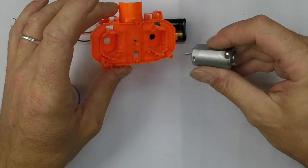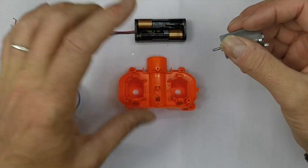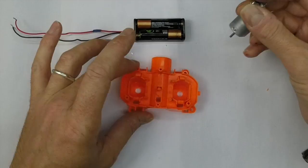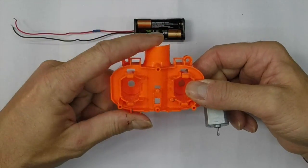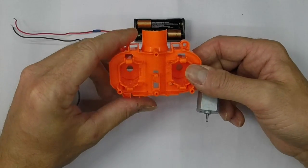First of all, we're going to look at motor orientation because that's the key to getting your polarities right. What you want to do is set your cage up so that the barrel end is facing away from you.